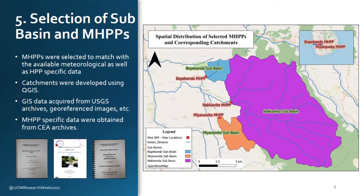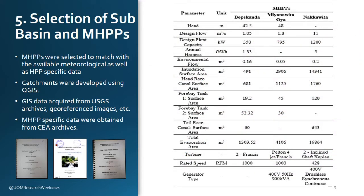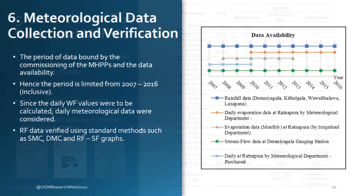The catchments were developed using GIS software with input data from USGS archives, geo-referenced images and other open sources. The mini hydropower plant specific data were extracted from documents acquired from CEA archives.